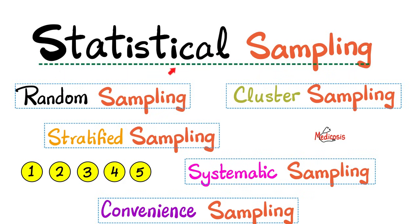Today we shall talk about statistical sampling. What is random sampling? What is non-random sampling? What is cluster sampling, stratified sampling, systematic sampling, and convenience sampling? Convenience sampling is convenient only if you are a mediocre, lazy statistician — which is redundant. Click the like button, click the subscribe button, and let's get started.